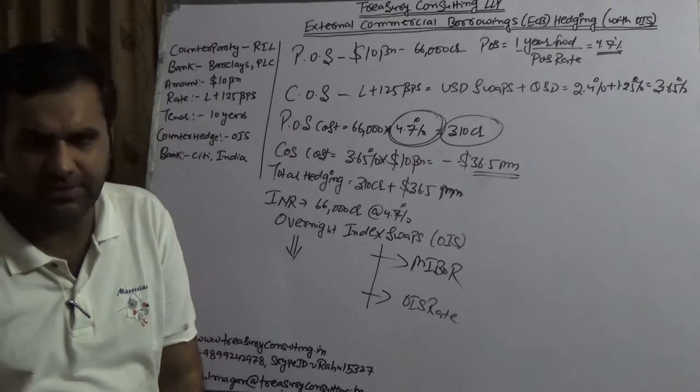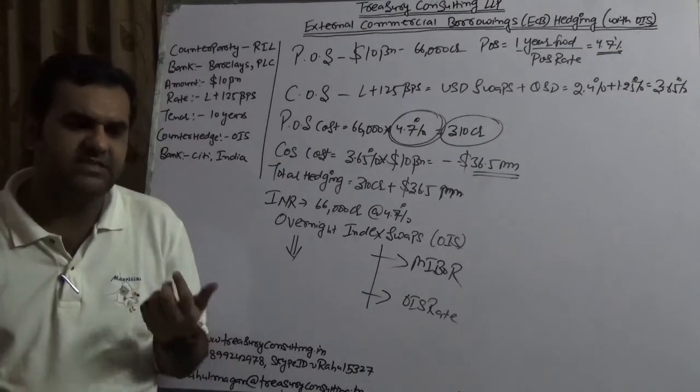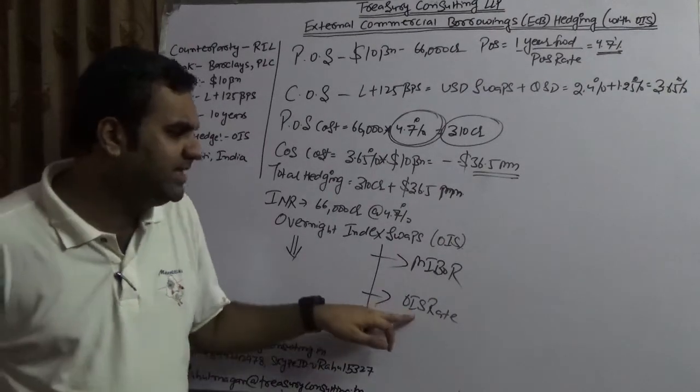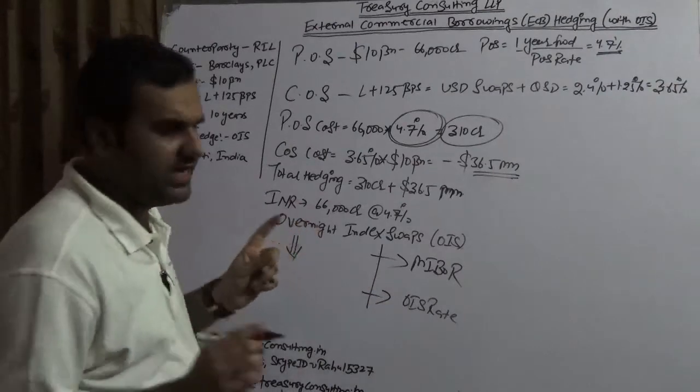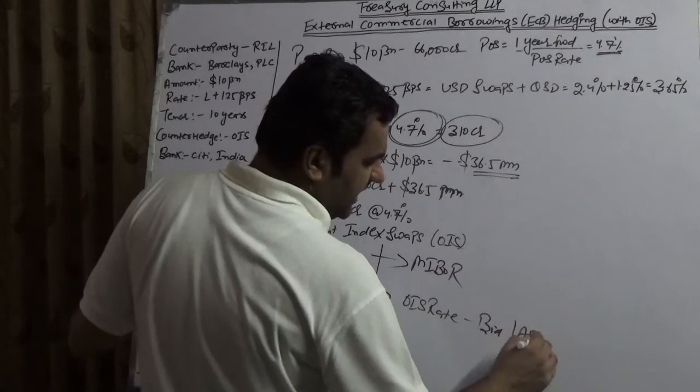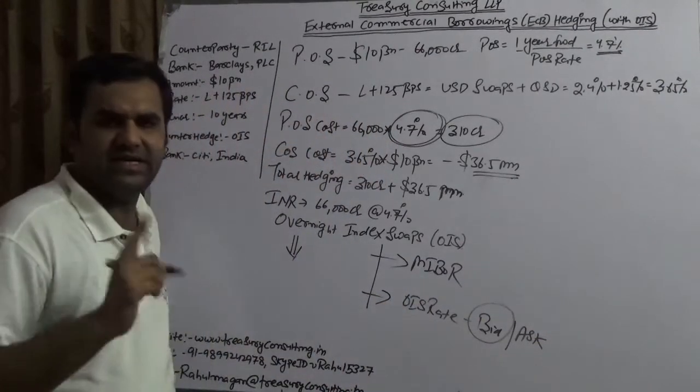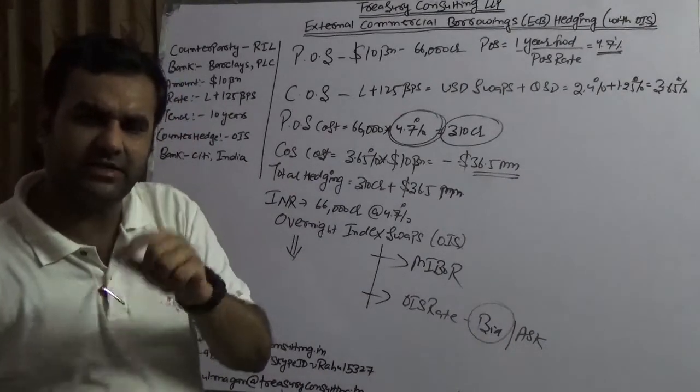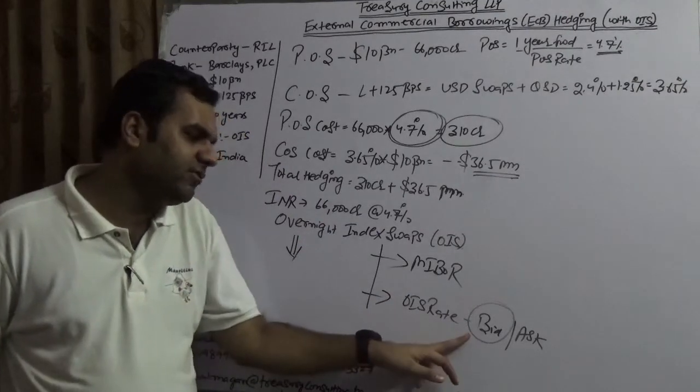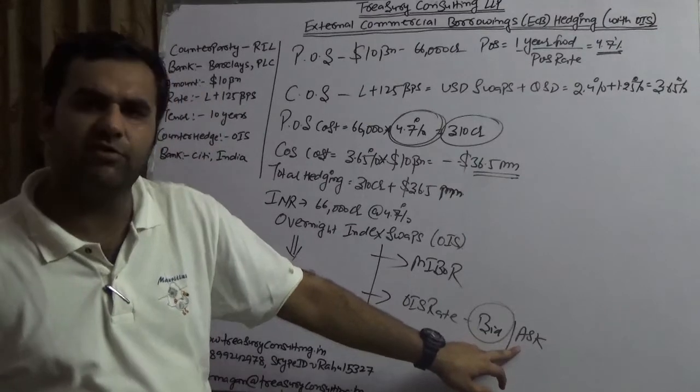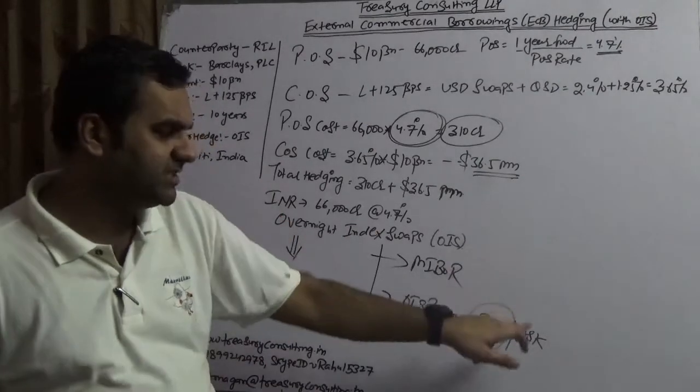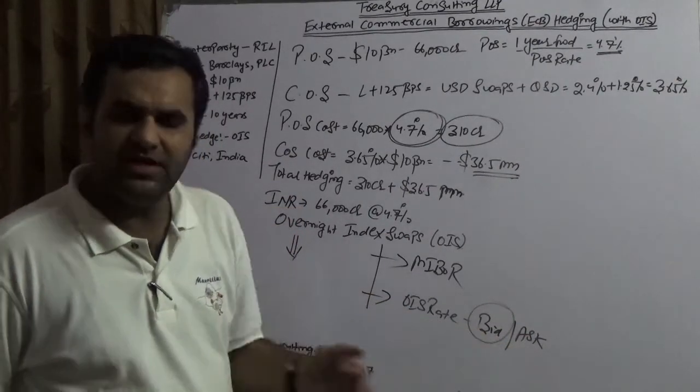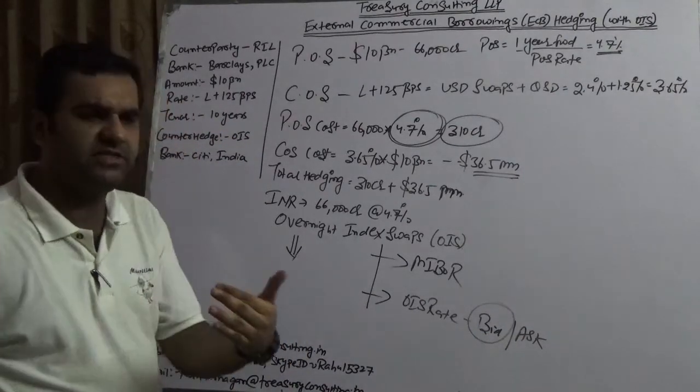Anytime between, MIBOR is coming. It is done by roughly 15 to 16 banks and there is a methodology. OIS is a fixed rate. It has both bid and ask. In case of a bid, you should have corporate asset and bank liability. In case of an ask, you should have corporate liability and bank asset. I repeat: in case of a bid, you should have corporate asset and bank liability. In case of an ask, you would have corporate liability and bank asset. You will go on the ask side because Reliance is hedging a liability which is 66,000 crores, which is ask side.